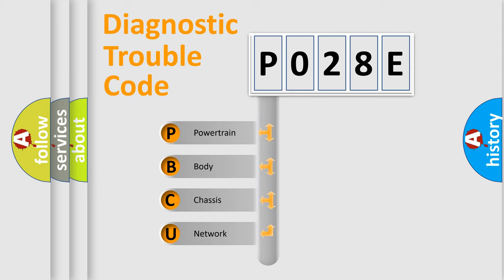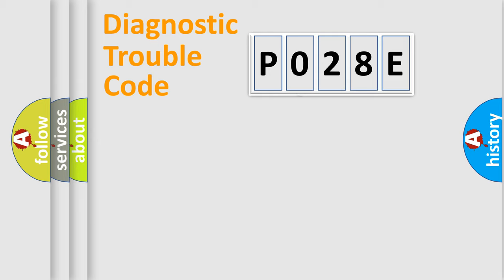We divide the electric system of automobile into four basic units: Powertrain, Body, Chassis, and Network. This distribution is defined in the first character code.